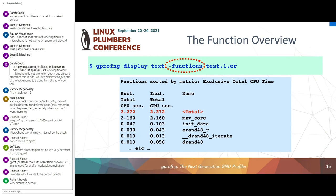Now that we've collected data, it's time to display it. Using 'display text' with an experiment directory — we support multiple directories, which can be aggregated or compared — I ask for the function overview. I get two columns with exclusive and inclusive CPU time and function names. The item called 'total' is generated by the tool and sums up the total metrics so you can see how other numbers relate to total time.